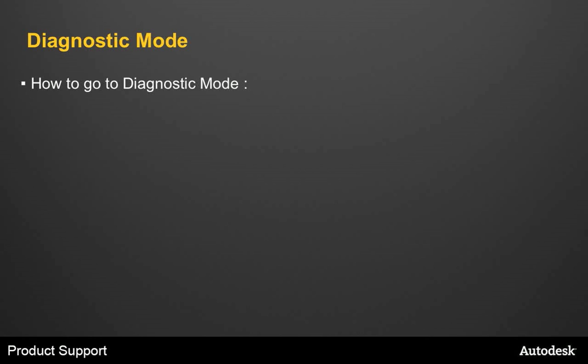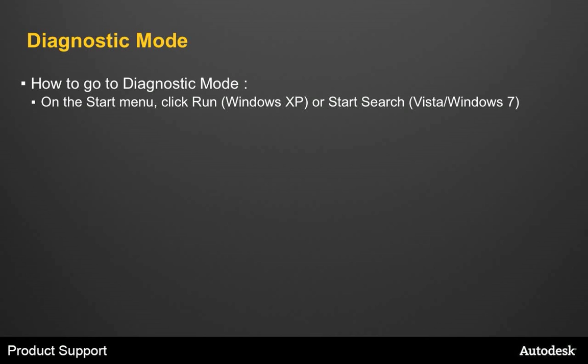One common way to troubleshoot AutoCAD problems is to run the software in safe mode. Unfortunately, this doesn't always work with newer versions of software because the necessary Autodesk licensing services don't load in safe mode. In this situation, the best troubleshooting alternative is to use msconfig to restart the Windows system in a state similar to safe mode but with the licensing services running. To get into diagnostic mode, from your Start menu in Windows XP, click Run, or do a Start search in Vista or Windows 7, and then in the Run dialog enter msconfig.